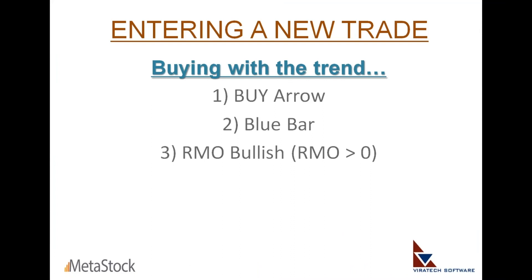While you go long or buy, you always want to look for a buy arrow, a blue-colored bar, and the RMO being above zero or in bullish mode. All three elements come up automatically when you apply the RMO Trade Model template — right-click, apply template, RMO Trade Model. You would see arrows, bars being colored blue or red, and the oscillator on top. The arrows read the short-term trend. The bar colors being red and blue read the medium-term trend. The RMO being above or below zero reads the primary or long-term trend.